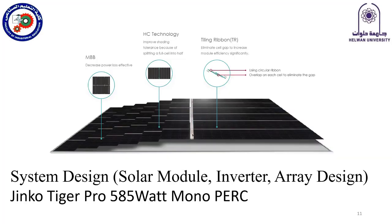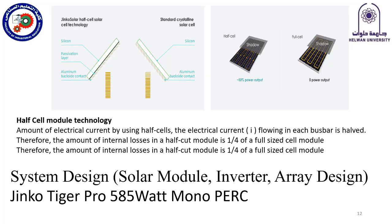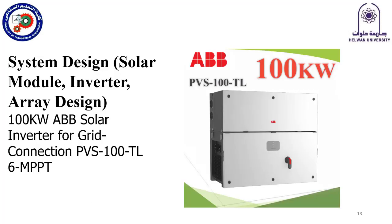We selected the Jinko Tiger Pro 585-watt monocrystalline cells. Half-cell technology is also used in this design to decrease the effect of shadows, which increases the efficiency of the station.